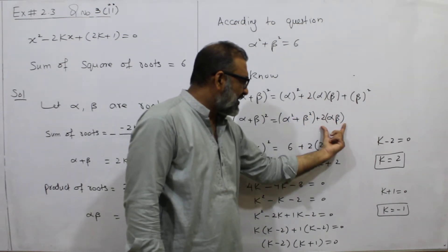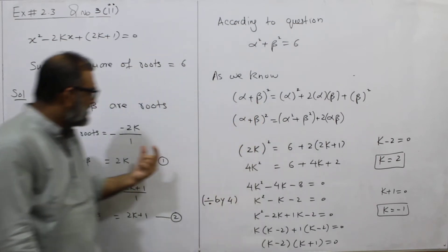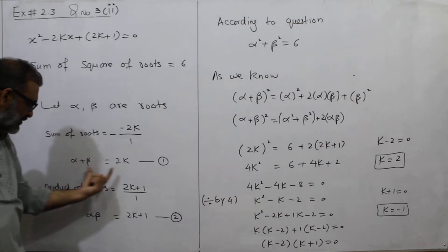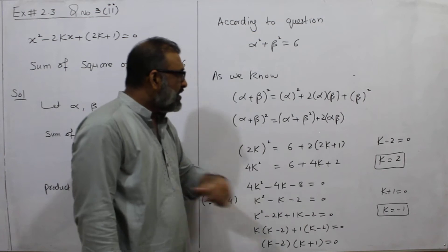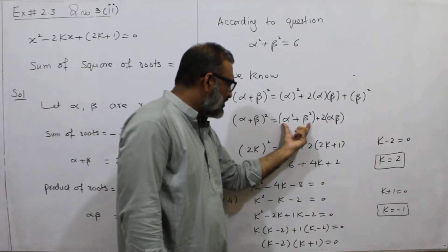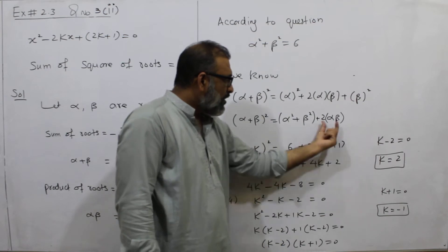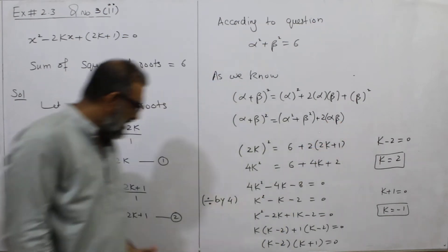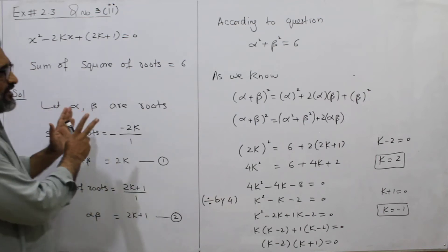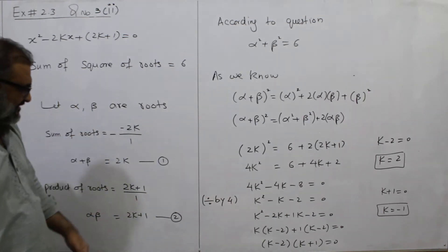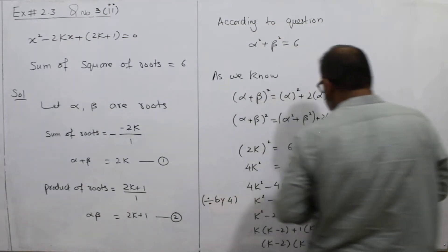2 of beta I have written here. If you see alpha plus beta value here, I have found it — I have found it in this bracket. Here the alpha squared plus beta squared value I have found. Alpha into beta value here is 2k plus 1. This is a very important question, likely to appear in the exam. I have copied this here and now I have to solve it.